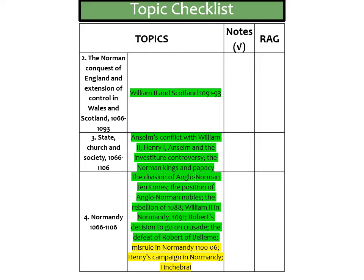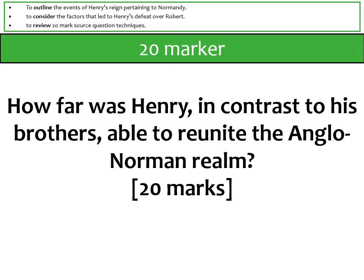Then Henry's campaign in Normandy, which concludes with the Battle of Tinchebray in 1106 — a major battle with a lot of information available online. This is the final topic for the Anglo-Saxon component. The 20-marker question you could potentially get would be: how far was Henry, in contrast to his brothers, able to reunite the Anglo-Norman realm? It's looking at how successful he was in consolidating power in Normandy.